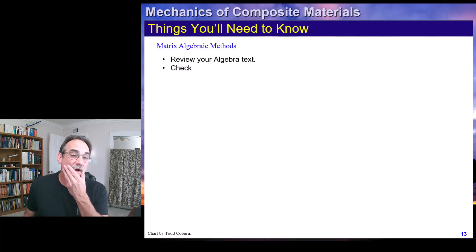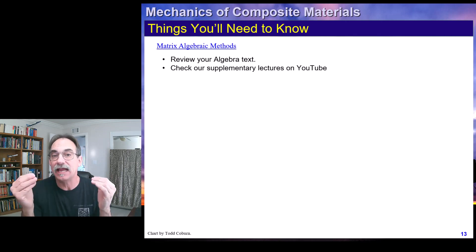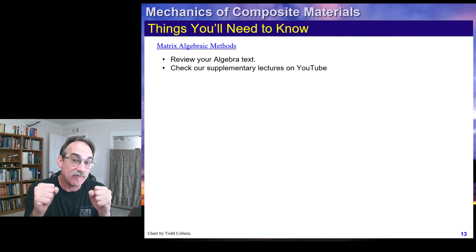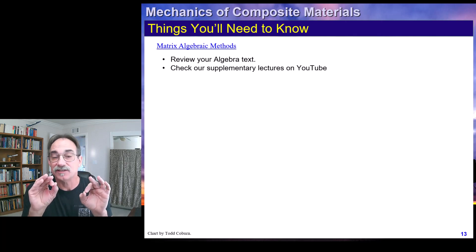What do you need to know? Well, you're going to need to be good at matrix algebra. Because of all the properties, where before we just had an isotropic property, all we needed was E and G and Poisson's ratio to characterize the material. And these three are linked, so you really only have two unique variables to fully characterize the material property. Not so with composite.